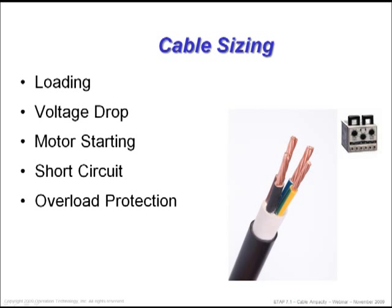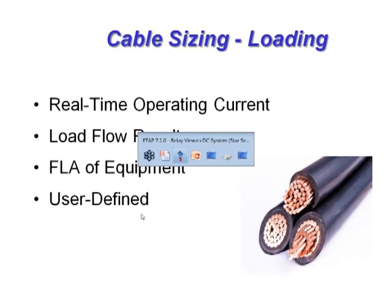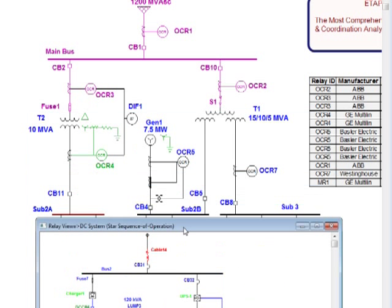With that, I'm done with cable ampacity and moving to cable sizing. Cable sizing is done based on actual loading current, voltage drop, short circuit, and overload protection — five different methods. For loading, you can base it on operating condition load flow results, full load amps, or user-defined. Let me go to the capacity page and select cable 2, which I've already set up.